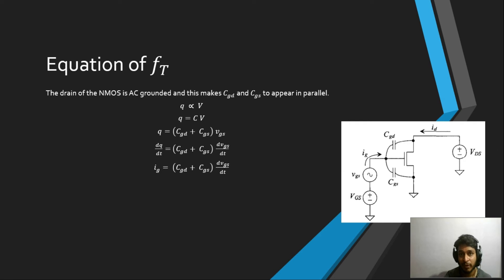The Fourier transform of a differentiation function is nothing but j omega times the function itself in frequency domain. So if you take that into consideration, IG of omega—the function is converted into the frequency domain, IG of omega, where omega is 2 pi F—which is equal to j omega times CGD plus CGS times VGS of omega.